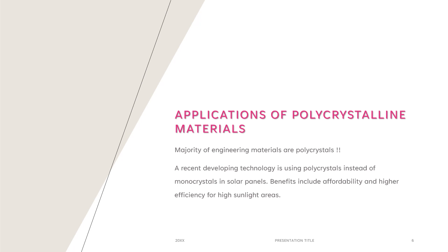I wanted to talk about a recently developing technology: researchers are trying to use polycrystals instead of monocrystals in solar panels. Some benefits include affordability and higher efficiency for high-sunlight areas. Monocrystalline solar panels are made of silicon wafers, which are very expensive but very efficient and have better heat tolerance than their polycrystalline counterparts. Polycrystalline materials are less expensive and have the same lifespan as monocrystalline materials.